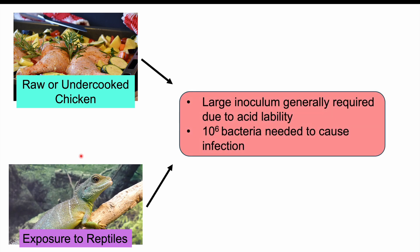With non-typhoidal Salmonella, we require a large inoculum — a large dose of bacteria — for infection to occur. The reason is that Salmonella is acid labile, meaning it is sensitive to and prone to being destroyed by acid. You need a larger amount of consumed bacteria to survive the stomach acid, allowing at least some to reach the small intestine. We often need about 10^6, or one million, bacteria ingested at one time to cause infection.